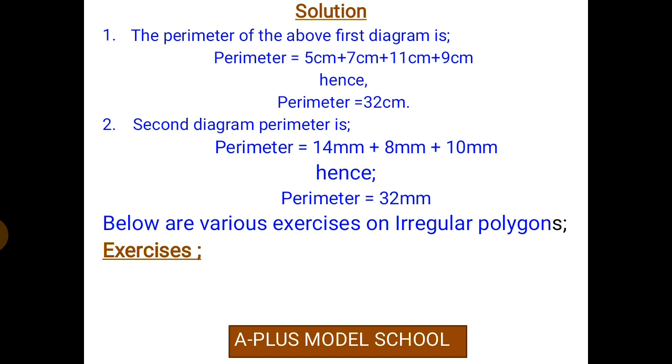The second one: 10 mm, 14 mm, 8 mm. The perimeter equals 14 mm plus 8 mm plus 10 mm. Hence, the perimeter is equal to 32 mm.